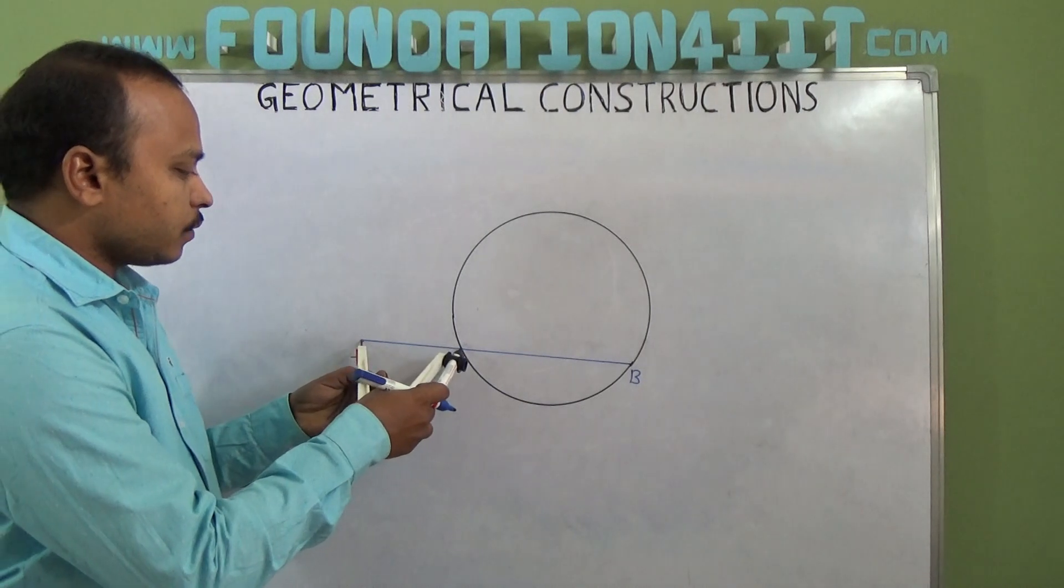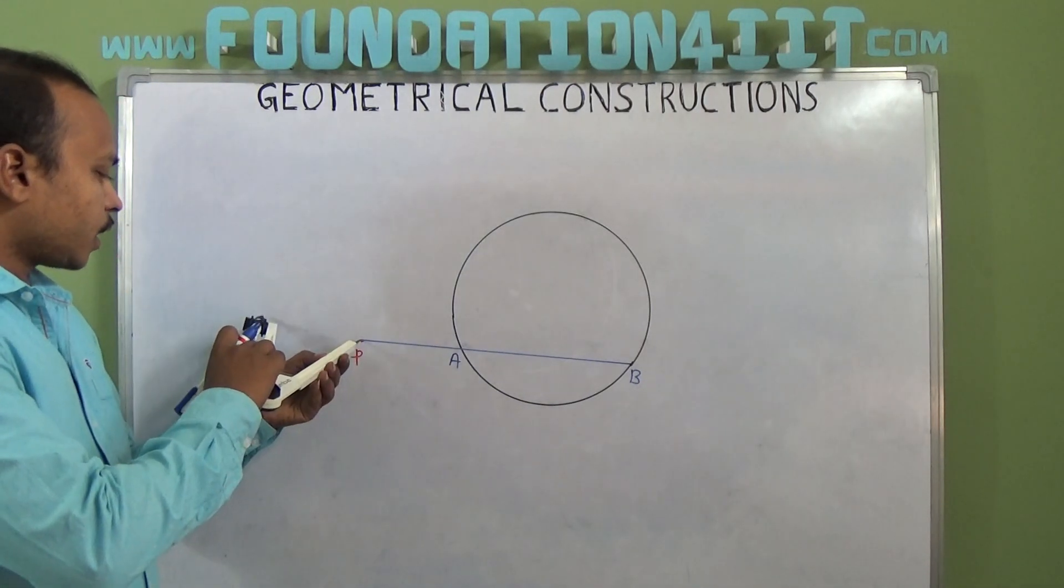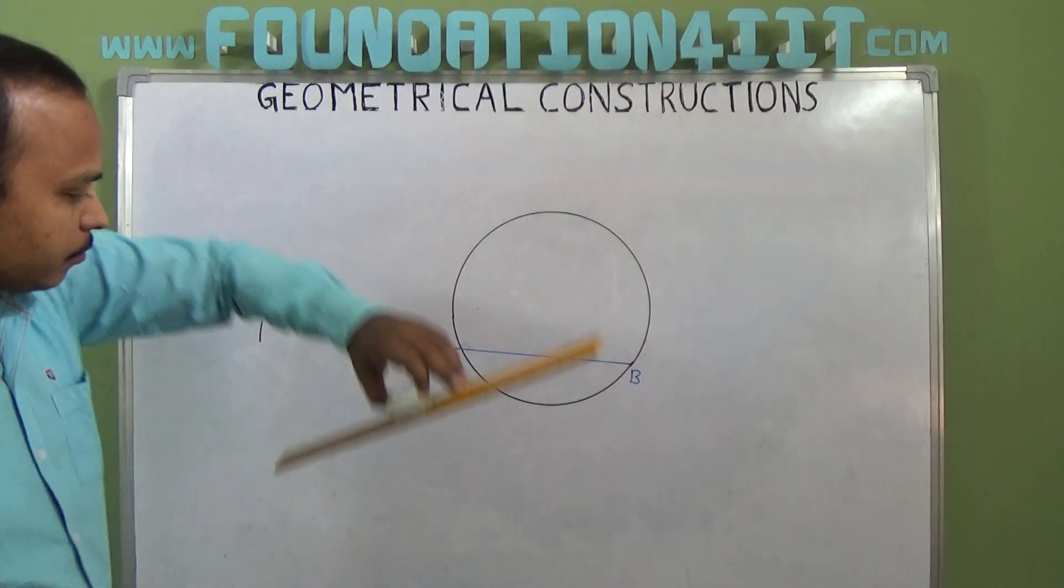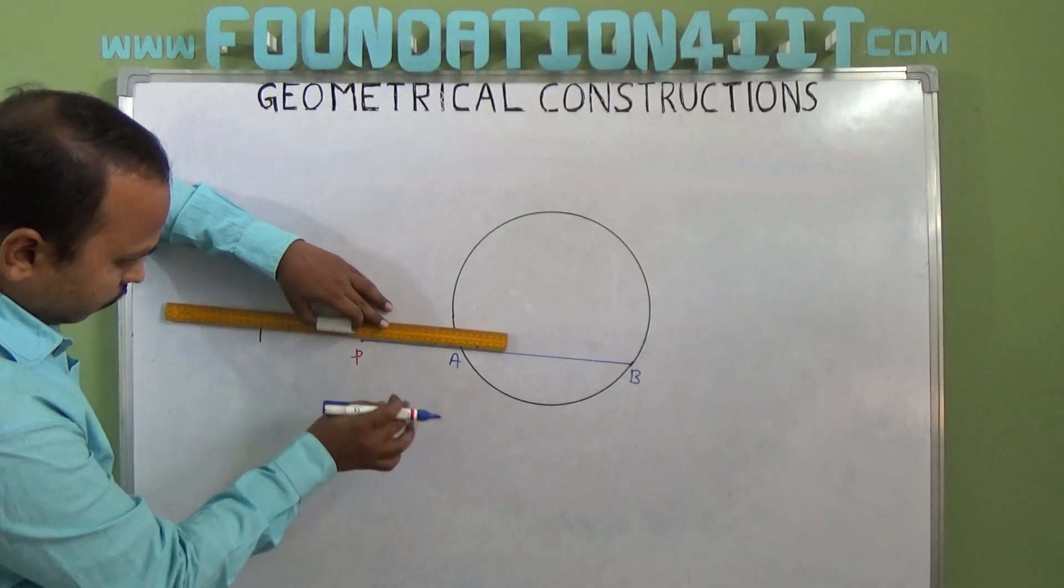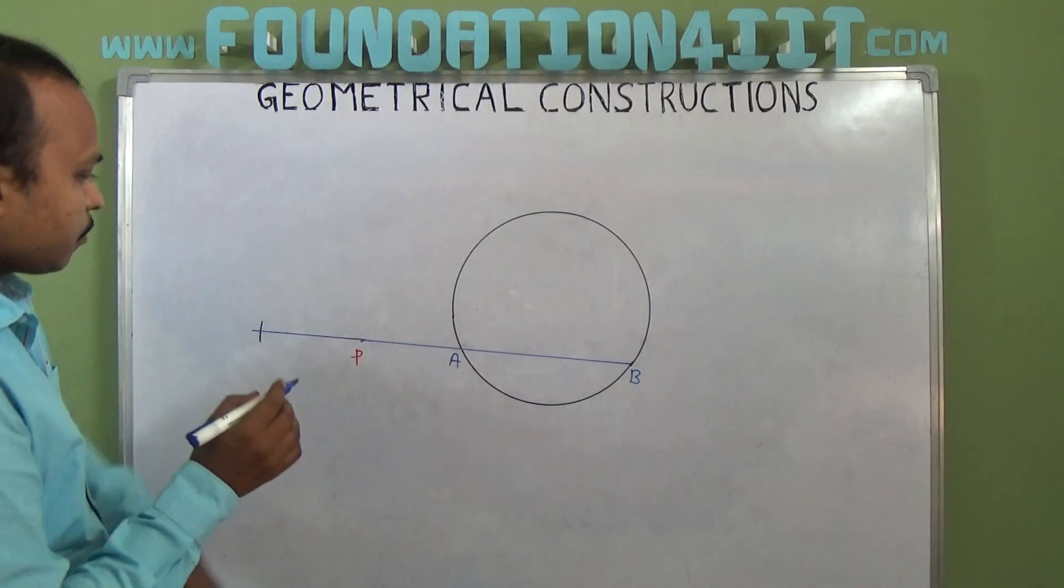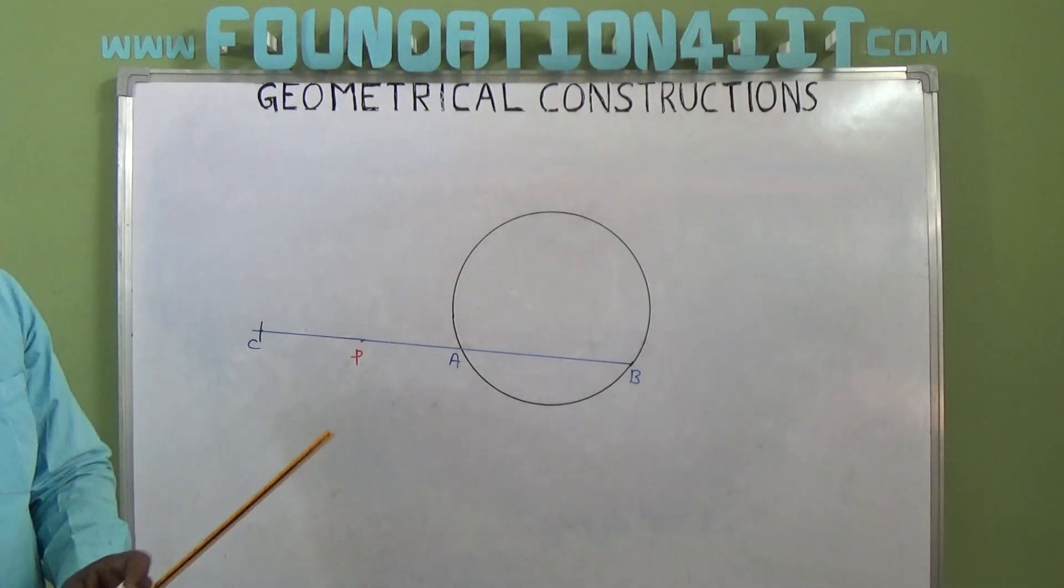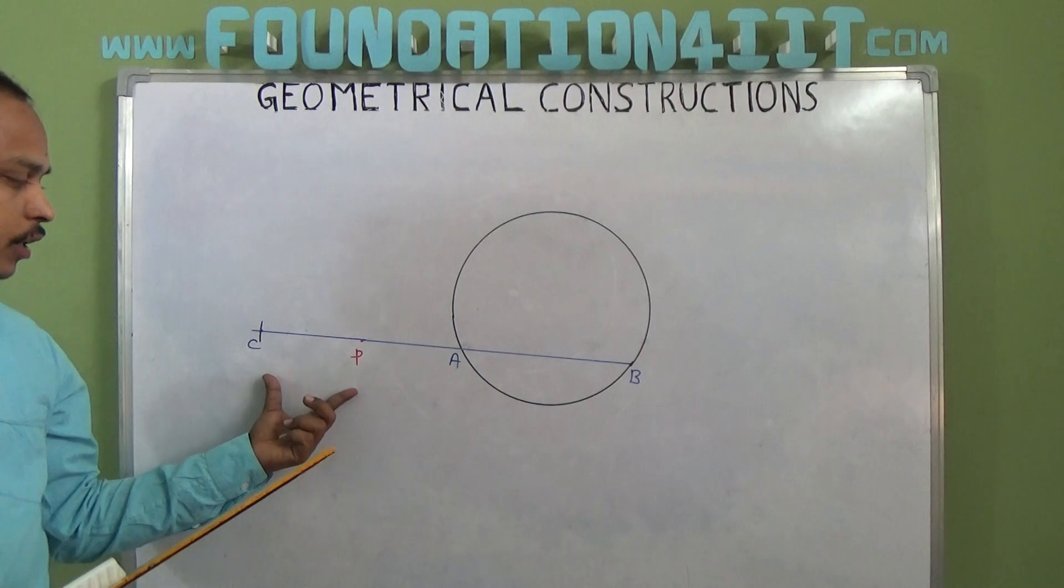Using P to A, you measure this, whatever it is, we can take an arc and we'll extend this point, extend this line. Now this is PC, AC. Okay, after taking secant, PA is exactly equal to PC.